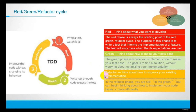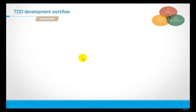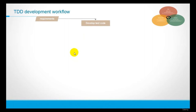In the previous lecture, we already understood the red-green-refactor phase circle — that is about TDD's three phases. In this lecture, we will introduce the TDD development workflow. First, we will receive requirements, maybe from the product owner or stakeholder. Then we will write the test case first, so we need to develop the test case code.